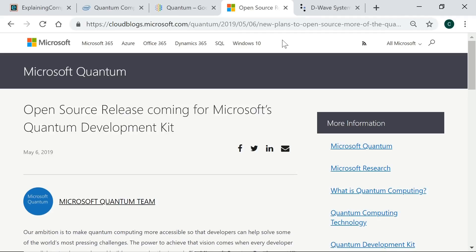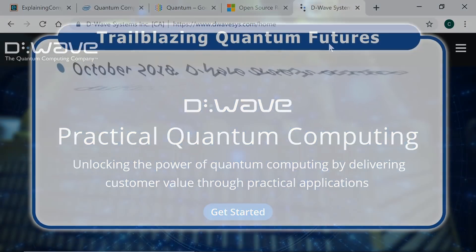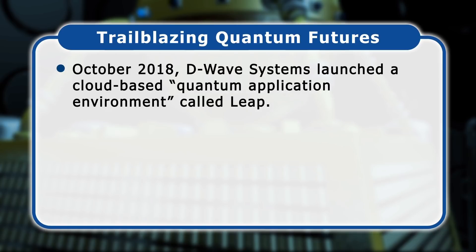Another long-term quantum computing pioneer is D-Wave Systems, which in October 2018 launched a cloud-based quantum application environment called Leap. This provides real-time access to a D-Wave 2000Q quantum computer, and in March 2019 was expanded to provide access in Japan and across Europe.